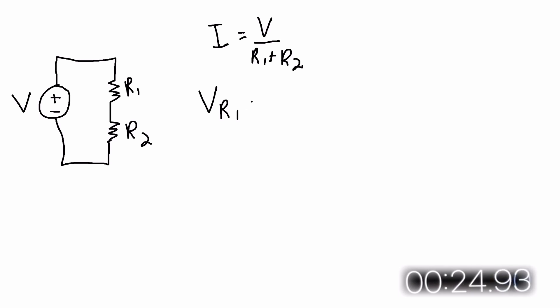The voltage across R1 is equal to the current times the resistance of R1. And if you substitute the equation above in for the current, you'll get this equation, which is the voltage divider equation.